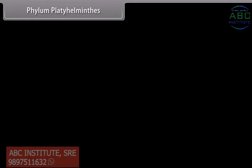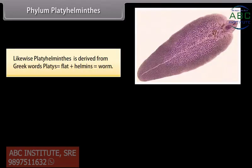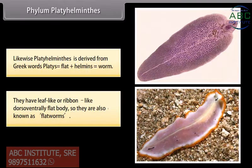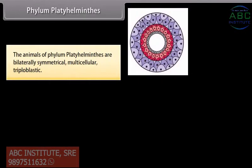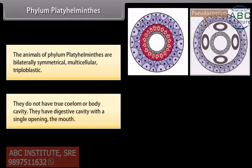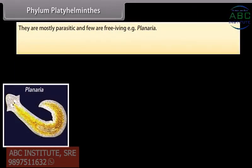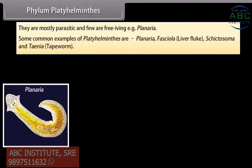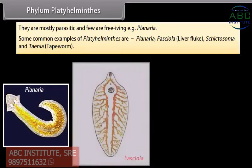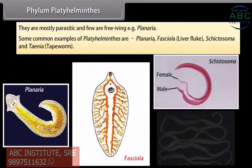Phylum Platyhelminthes is derived from Greek words 'platys' meaning flat plus 'helminth' meaning worm. They have leaf-like or ribbon-like, dorso-ventrally flat bodies, so they are also known as flatworms. The animals are bilaterally symmetrical, multicellular and triploblastic. They do not have a true coelom or body cavity. They have a digestive cavity with a single opening, the mouth. They are mostly parasitic and few are free-living, e.g. Planaria. Common examples include Planaria, Fasciola (liver fluke), Schistosoma and Taenia (tapeworm).